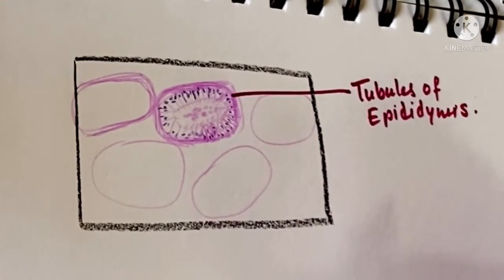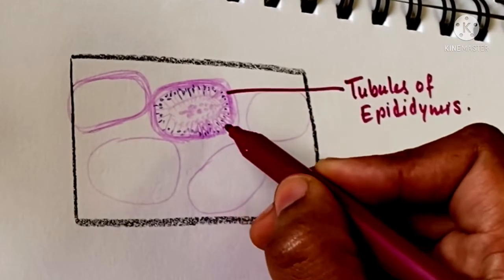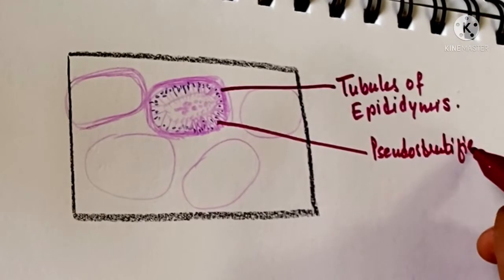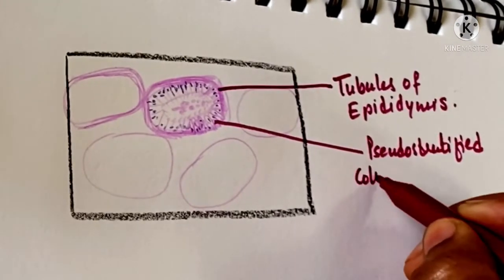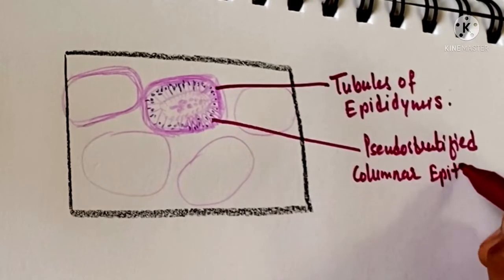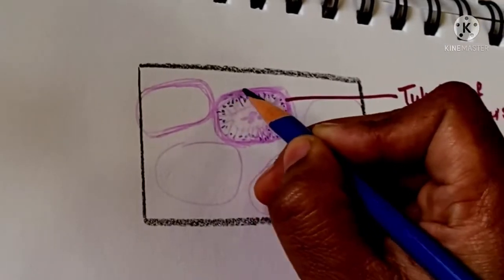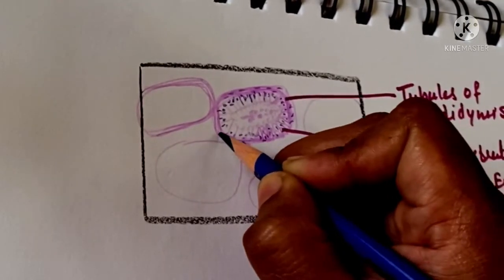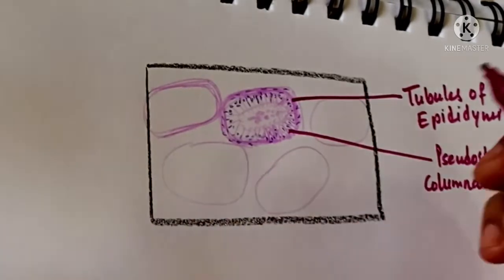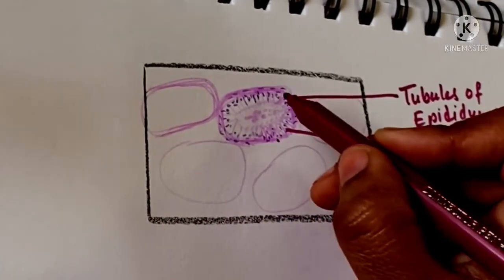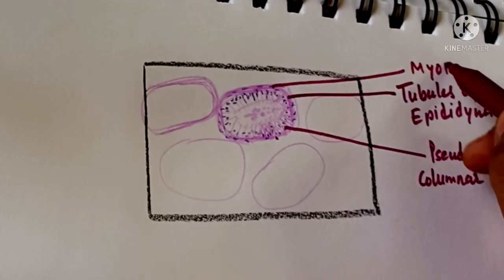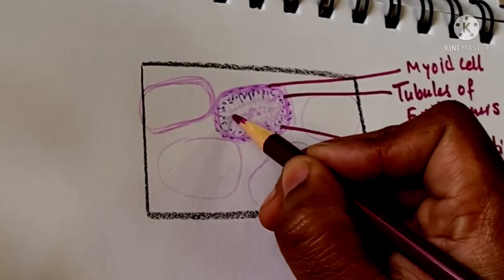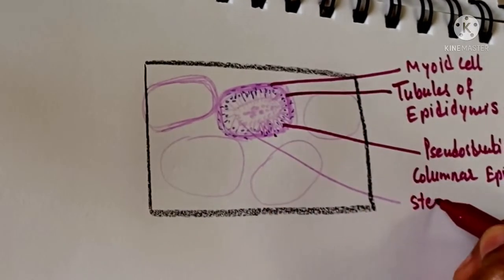Tubules of epididymis have pseudostratified columnar epithelium. Outside the epithelium, there is presence of a thin layer of circular smooth muscle cells which gradually increase in thickness. Here we see the muscle cell layer or myoid cell, and stereocilia.